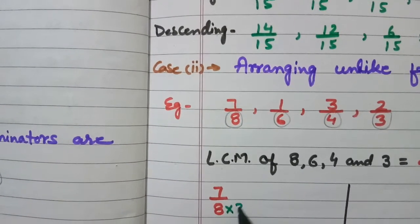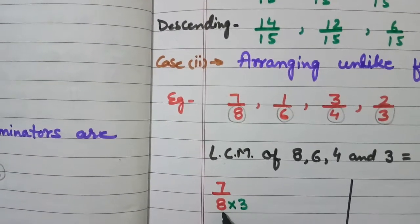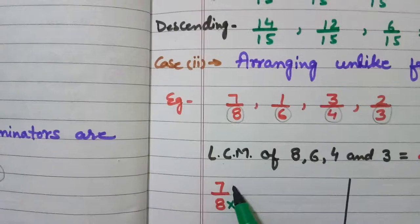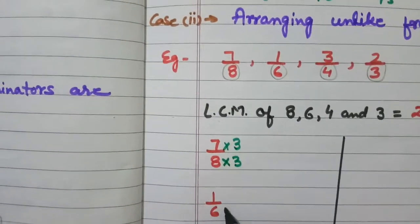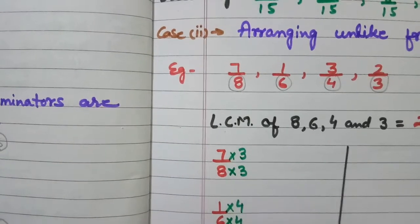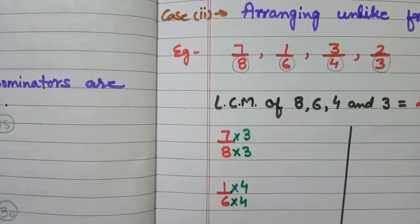If you multiply 8 by 3, it will be 24. Hence we are multiplying 8 by 3, we are going to multiply 7 also by 3. And 6 multiplied by 4, so 1 is also being multiplied by 4. Now, 4 multiplied by 6.